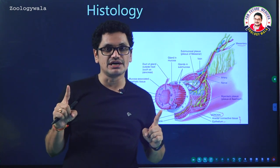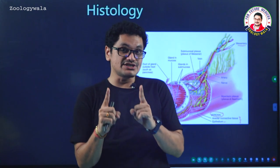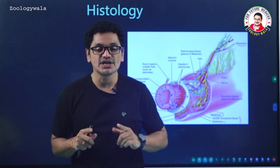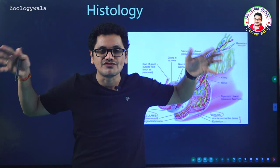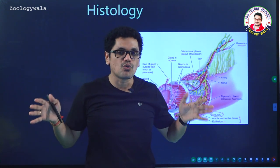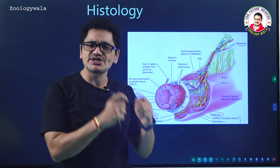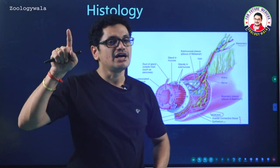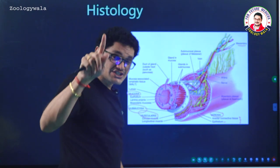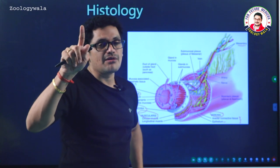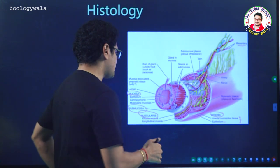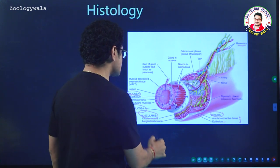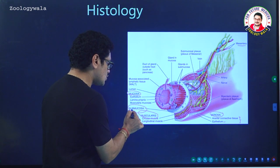Especially if it is the stomach, an oblique muscle layer is also present. In the stomach, gastric glands are present and hydrochloric acid is produced, which may damage the wall of the stomach. In order to protect the wall of the stomach from the highly acidic gastric juice (HCl), oblique muscles play a crucial role. If it is the stomach, oblique muscles are present; otherwise, circular muscles and longitudinal muscles are the two sets of muscles seen. Below that is the submucosa.